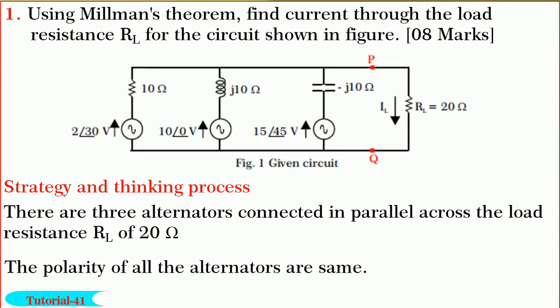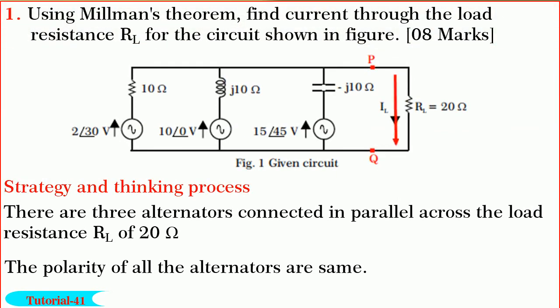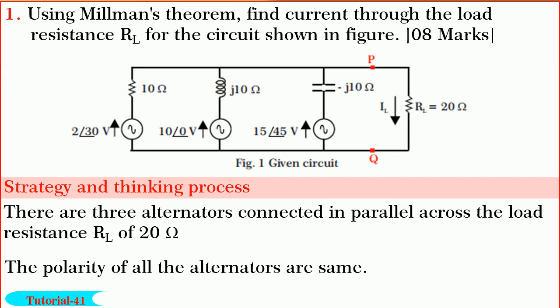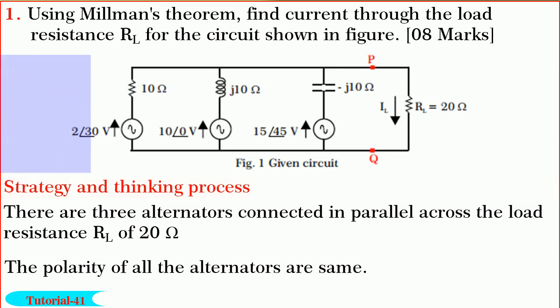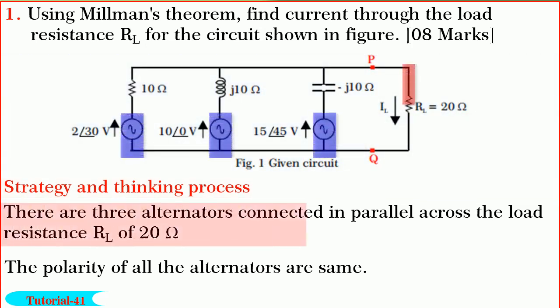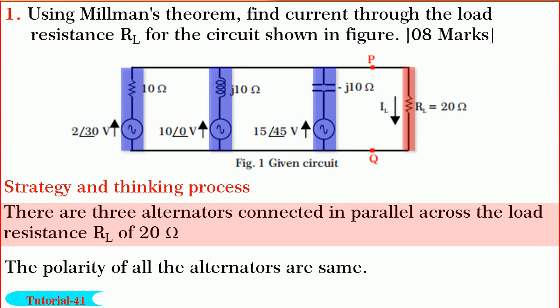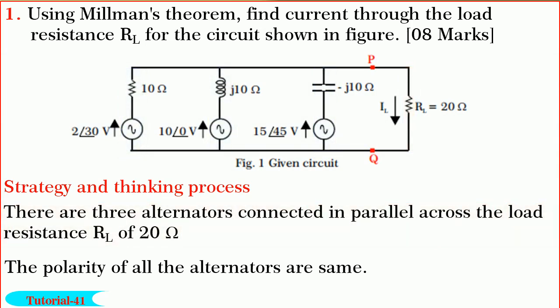Friends, first let us solve the question on Millman's theorem. We are required to find current through the load resistance RL in the network shown in figure. Let me discuss the strategy and thinking process before we start solving the problem. Observe the given network. There are three alternators connected in parallel across the load resistance RL. One source is of 2∠30 volts with an internal resistance of 10 ohm in series.